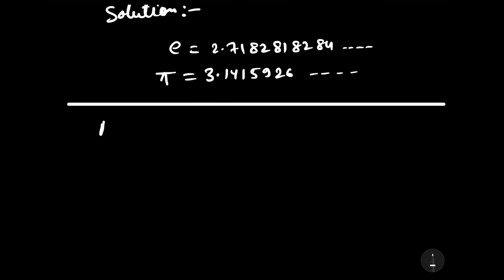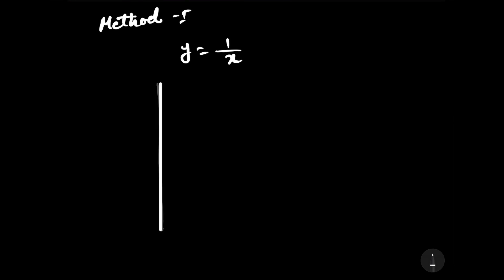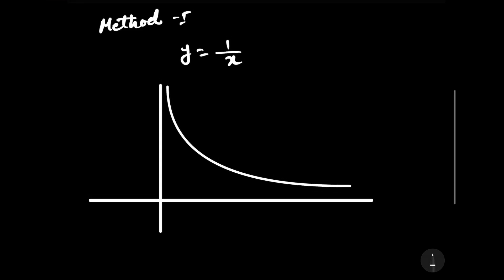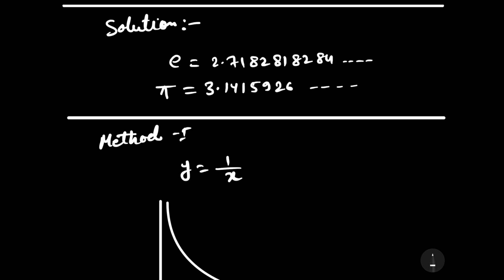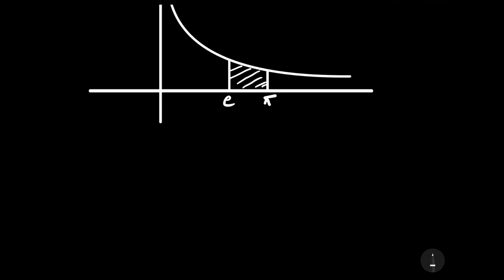Let me solve it by Method One. Let us draw the graph of the function y = 1/x. The graph of y = 1/x looks something like this for the positive quadrant of x. Clearly, the value of pi is greater than the value of e. If we mark e on the x-axis it will be here, and pi will be further along.